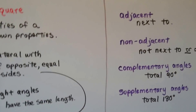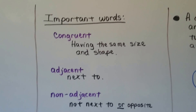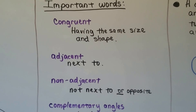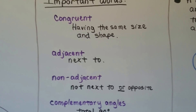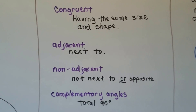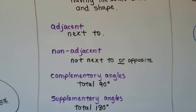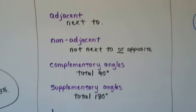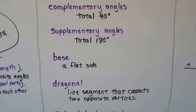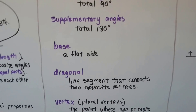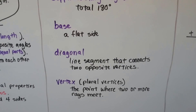So we've had a lot of important words. Congruent means having the same size and shape. Adjacent means next to. Non-adjacent means not next to, or opposite. Complementary angles, when added together, total 90 degrees. Supplementary angles, when added together, total 180 degrees. A base is a flat side. A diagonal is a line segment that connects two opposite vertices. And a vertex — the plural is vertices — is the point where two or more rays meet.